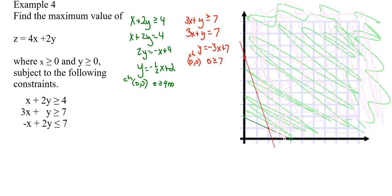And then my last one is that negative x plus 2y is less than or equal to 7. So negative x plus 2y equals 7, which gives 2y equals x plus 7, and y equals one-half x plus seven-halves.